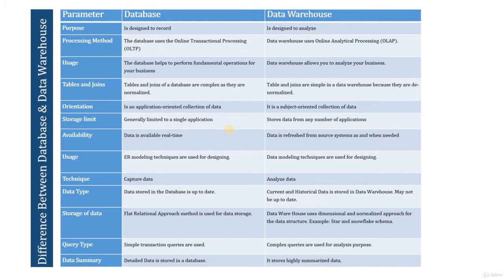The first parameter is purpose. Database is designed to record data, while data warehouse is designed to analyze data. The data in the database is entered and recorded for current and future use. In data warehouse, historic data is stored, accessed from the database, and used for analysis purposes.